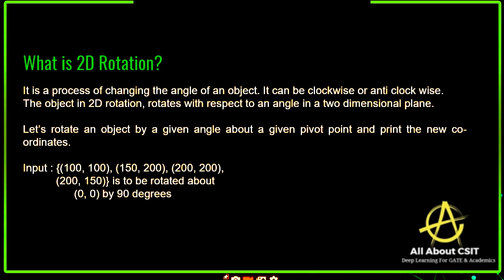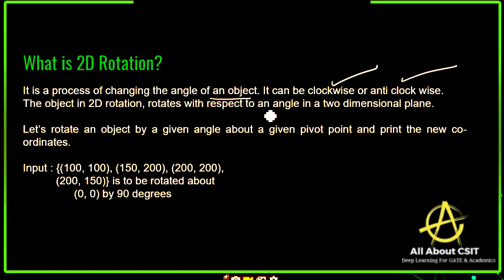Rotation — when we are talking about rotations, we have to work on trigonometry, because whenever the angles concept is there, just recall your trigonometric formulas. It's simple formulas. It is a process of changing the angle of an object. It can be either in the clockwise or in the anti-clockwise direction. The object in 2D rotation rotates with respect to an angle in a two-dimensional plane.